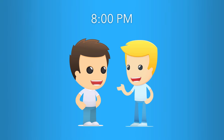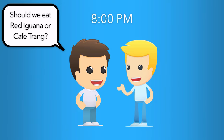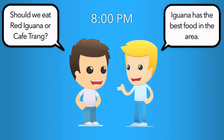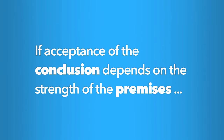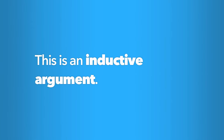On the other hand, what if it's only 8pm? Both restaurants are still open and available. When your friend asks which one you should choose, you reply: Red Iguana has the best Mexican food in the area; Cafe Trang is okay, but it's not that great, so we should go to the Red Iguana. In this case, the decision to go to the Red Iguana cannot be said to be proven true. The conclusion does not logically follow from the premise — just because you think Red Iguana has better food does not mean you or your friend must choose it. You have simply tried to build a case for why it's the better option. An argument in which acceptance of the conclusion depends on the strength of the premises, where the premises do not prove but merely support the conclusion, is an inductive argument.